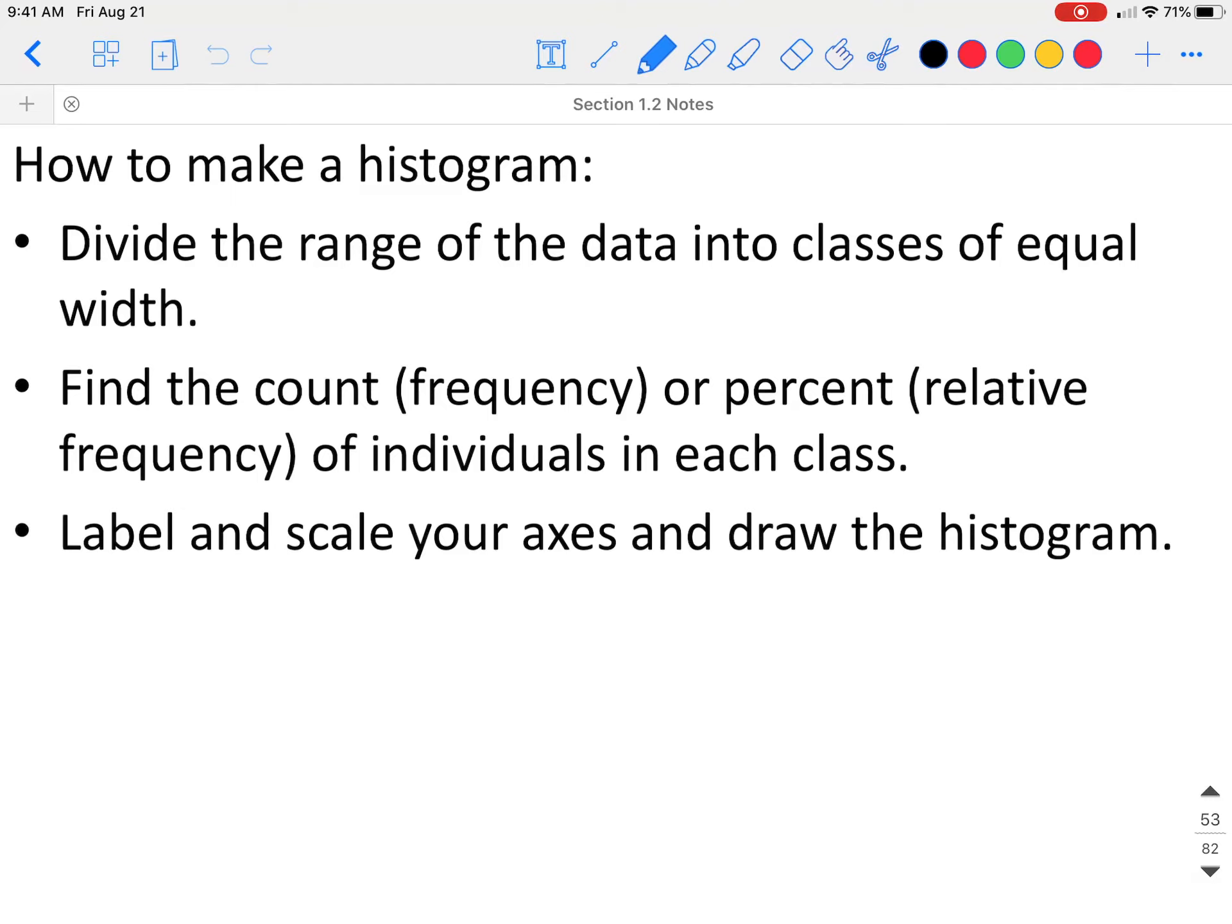When you're making a histogram, the first thing you need to do is divide the range of the data into classes of equal width. So if we have data values that go anywhere from the 10s to the 80s place, you might want to break them down into 10s. You would have one bar that has a width of 10, the next one is another width of 10, but all those widths or the classes have to be the same size.